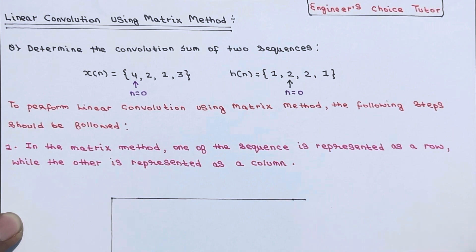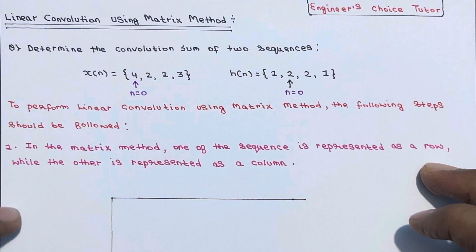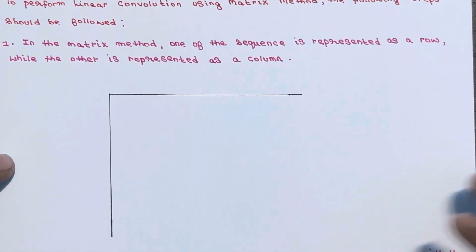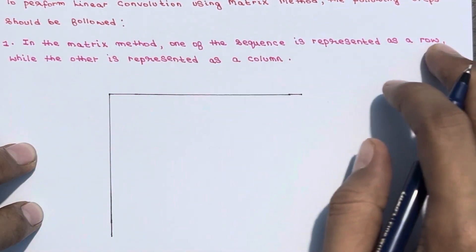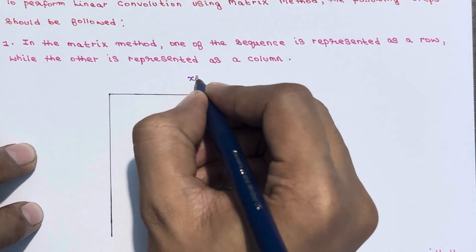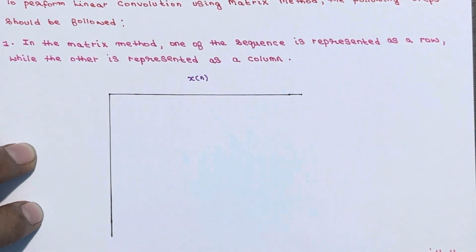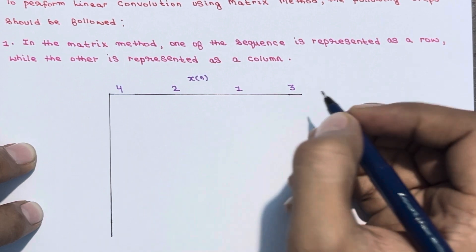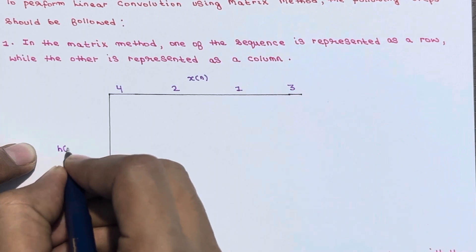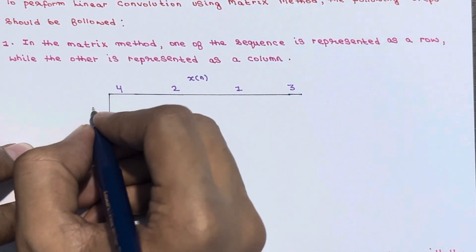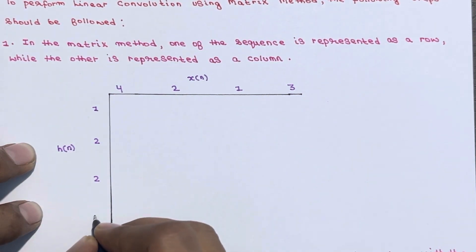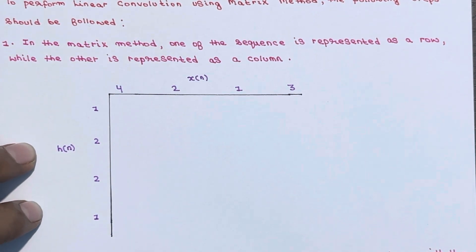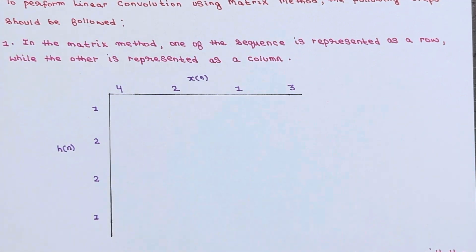The first step in the matrix method is that one of the sequences is represented as a row while the other is represented as a column. Here, x(n) = {4, 2, 1, 3} is represented as a row, while h(n) = {1, 2, 2, 1} is represented as a column.